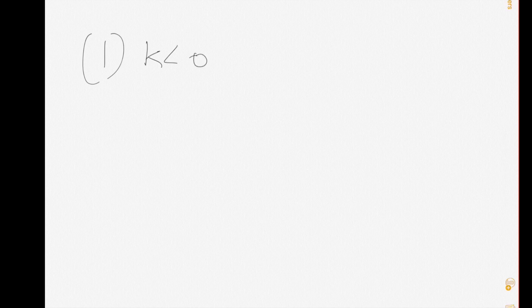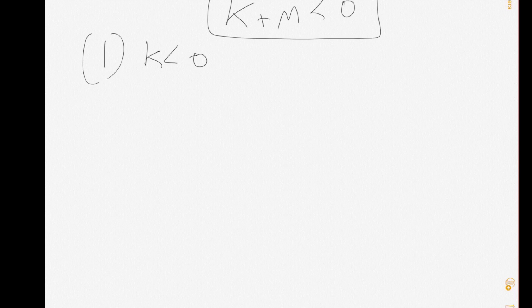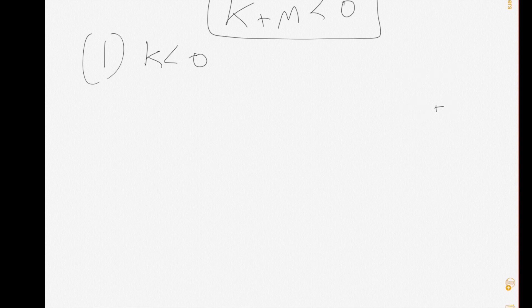Welcome back. Now let's do it together. Number one says k is less than zero. Now we want to know: is k plus m less than zero? The only way k plus m will be less than zero is if either both of them are negative, or one of them is negative and has a bigger absolute value than the other one.